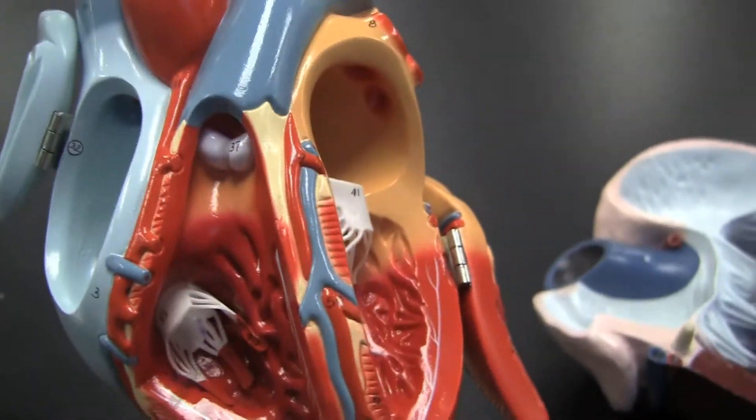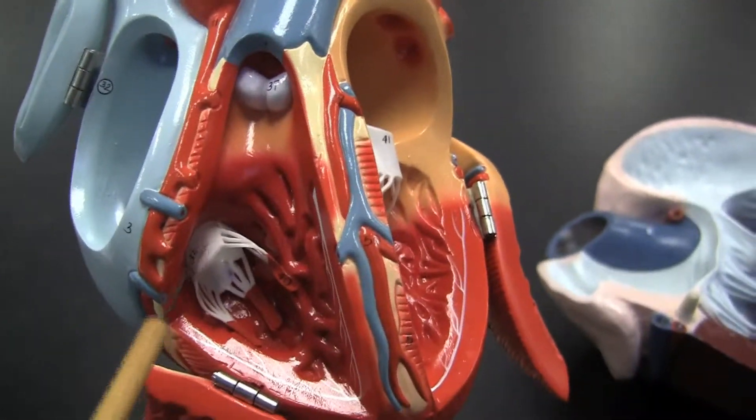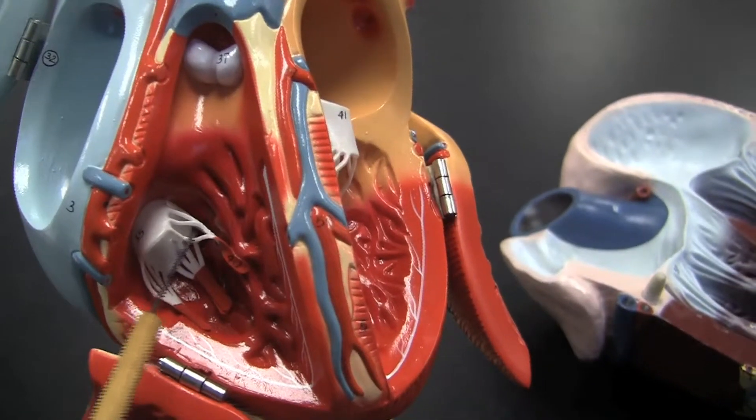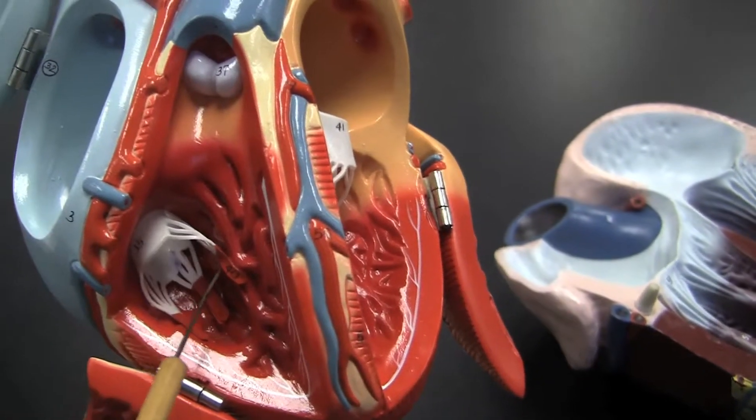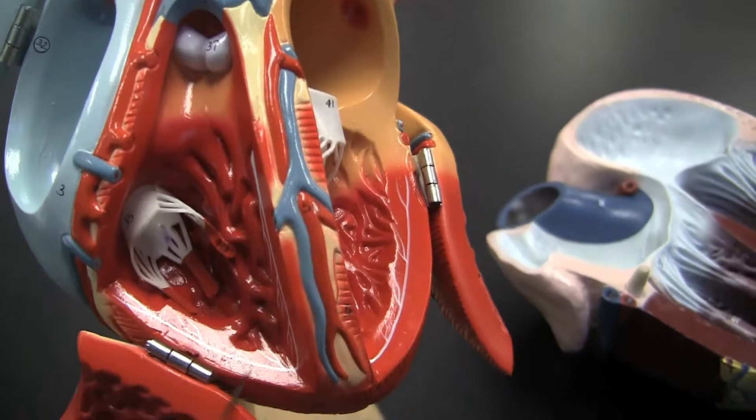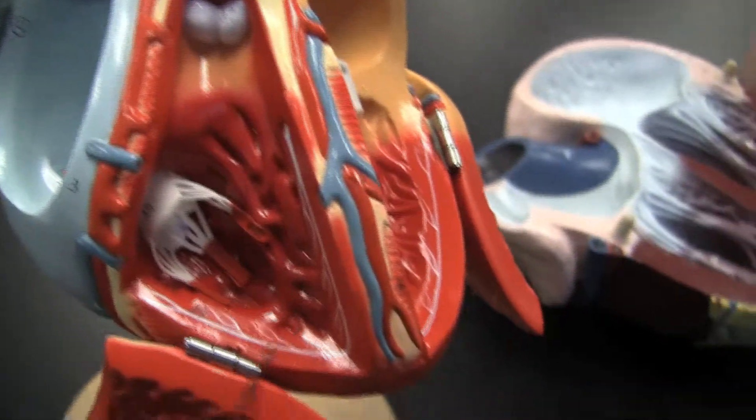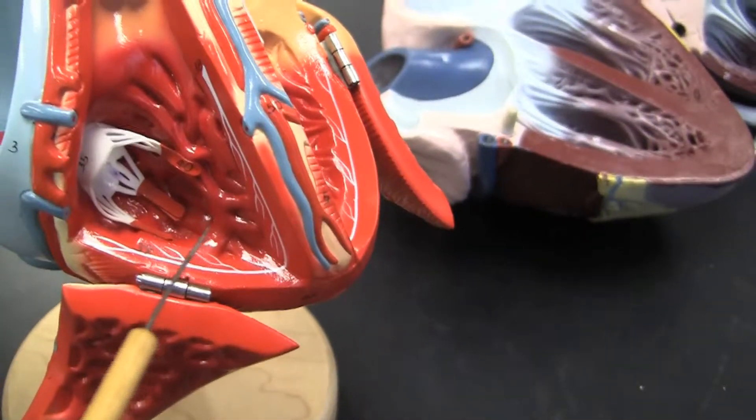Tricuspid is going to come down to the right ventricle, chordae tendineae attached there, then the papillary muscles, then the trabeculae carneae muscles. The moderator band is going to be in the sheep heart.